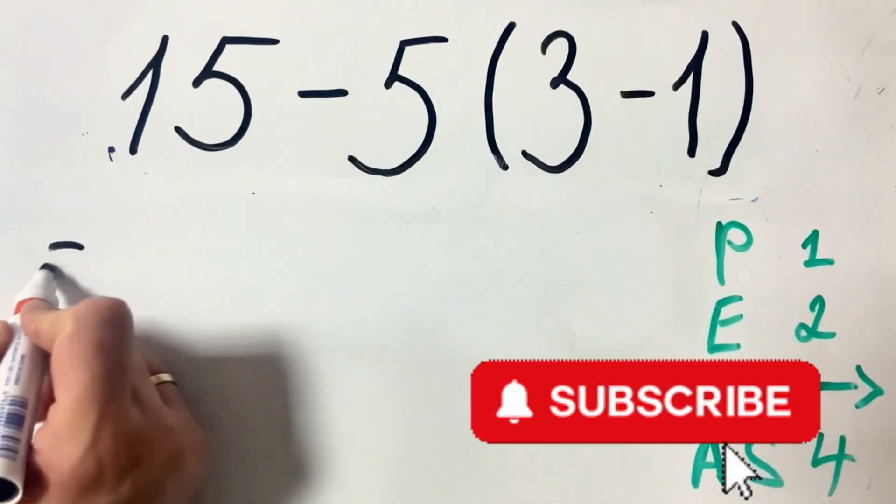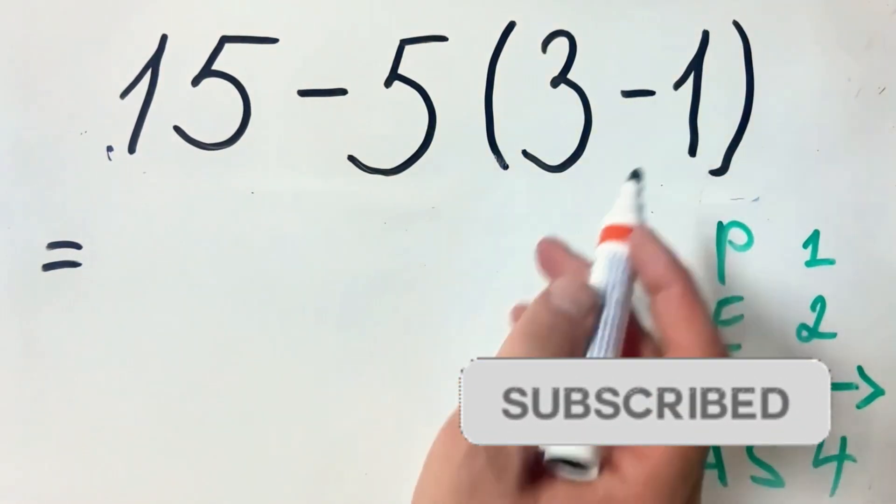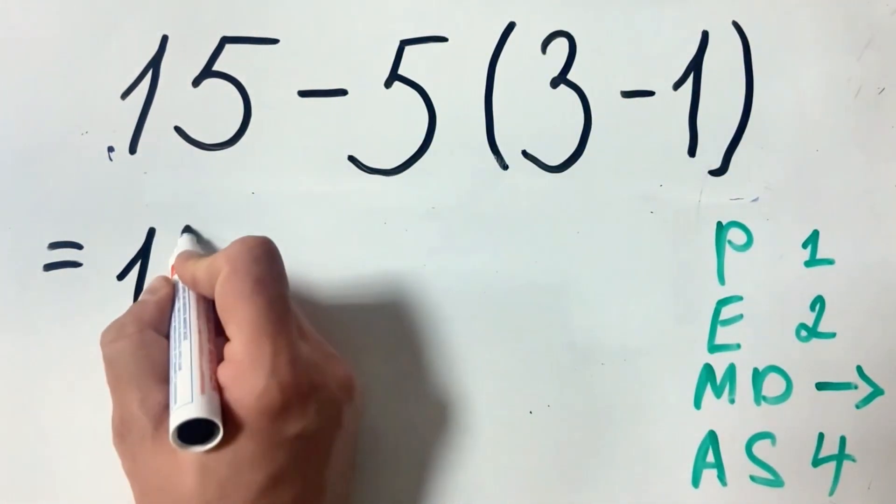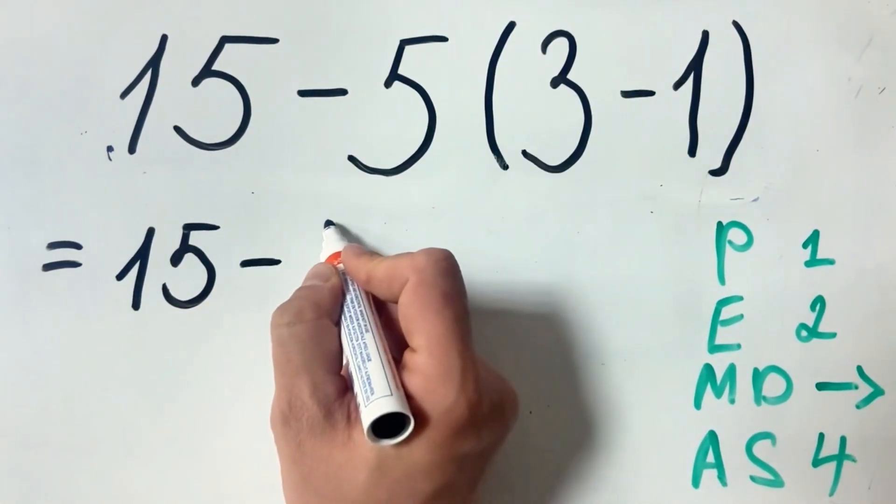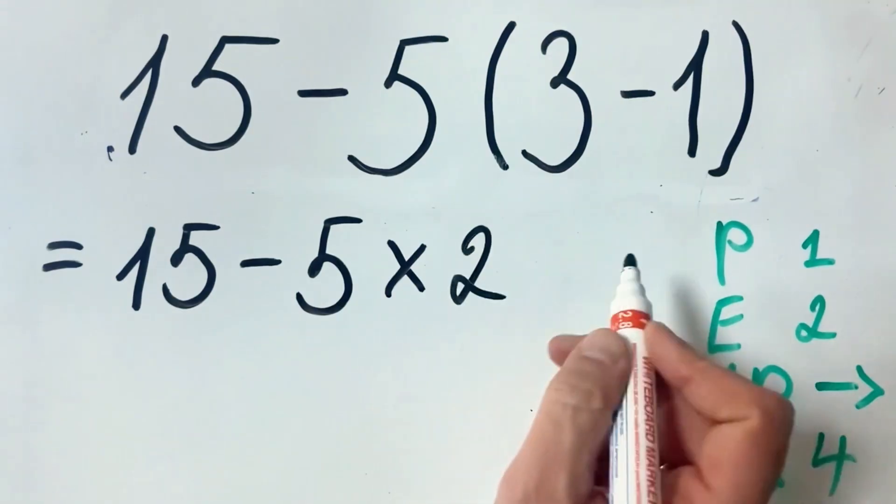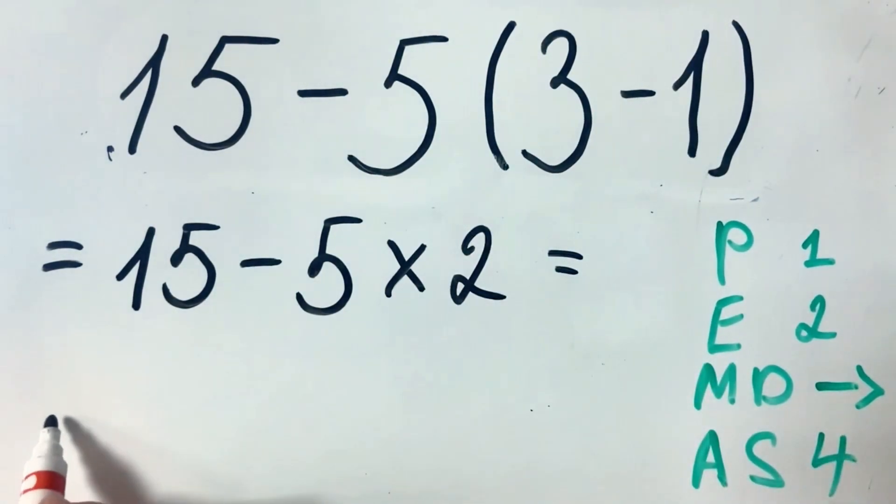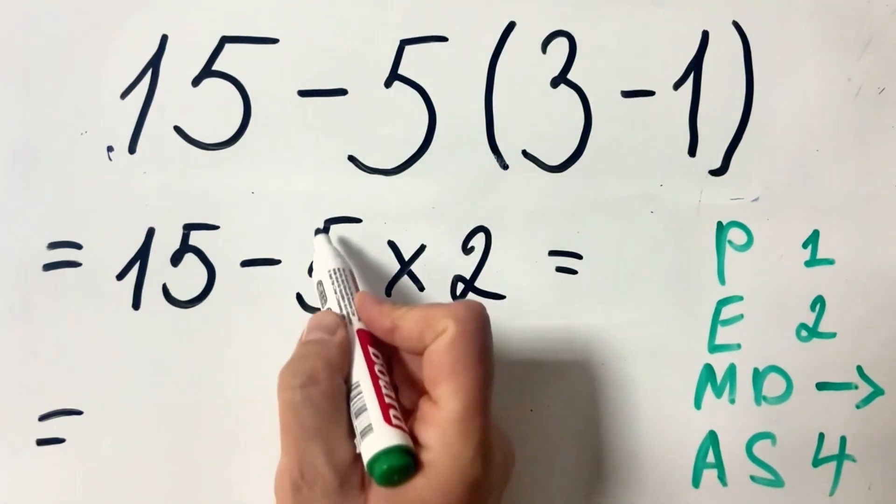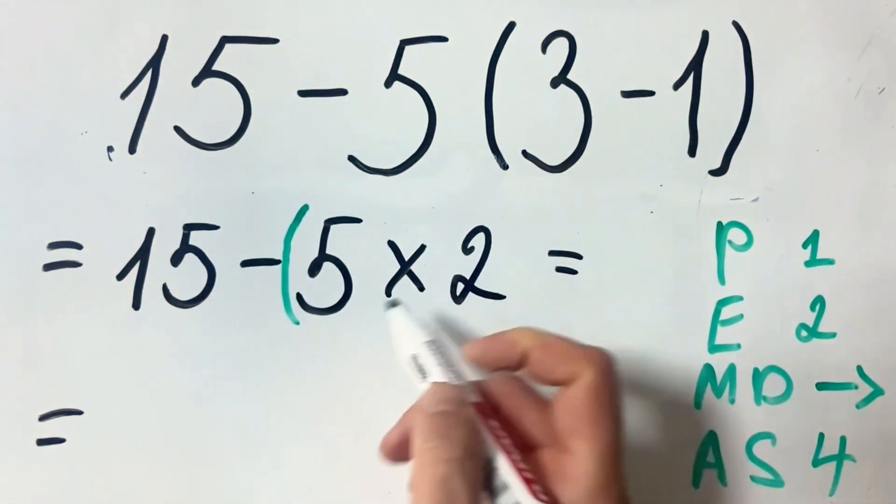So what we get is, first we do what's inside the parentheses, so we get 15 minus 5 multiply 2. As an advice to solve this easier, you can always add brackets.